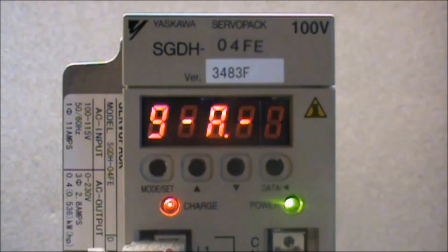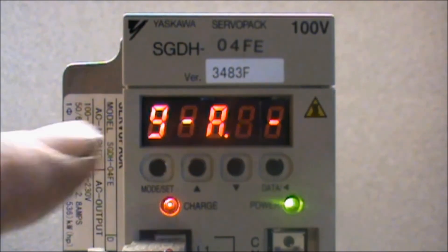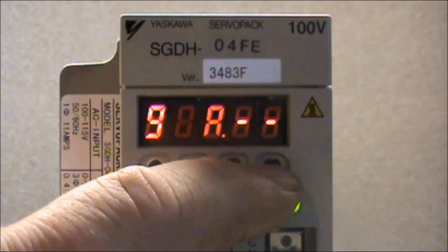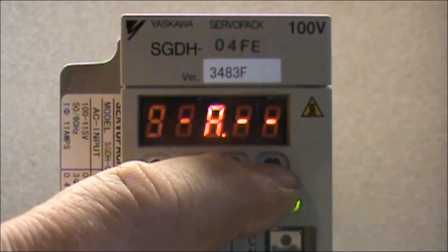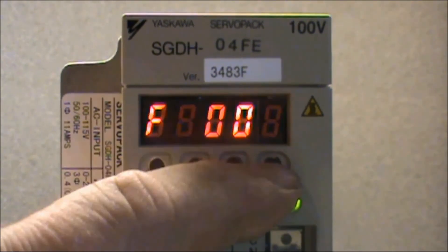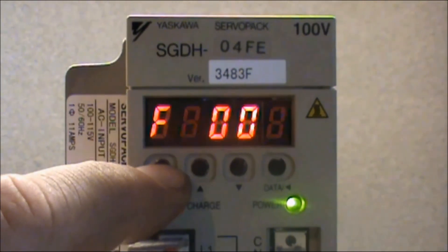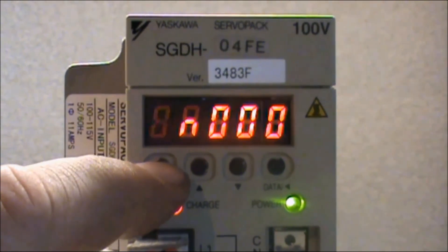Now to back out and go back to the original display, you will press and hold the data button until you are back into the auxiliary function mode. Then press the mode set button until you are back into the base block where the screen reads BB.